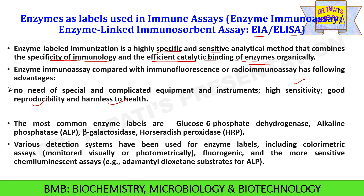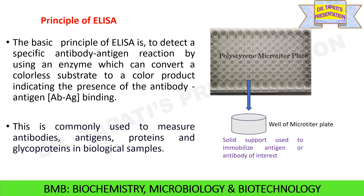The most common enzyme labels are glucose-6-phosphate dehydrogenase, alkaline phosphatase (ALP), beta-galactosidase, and horseradish peroxidase. Various detection techniques have been used for enzyme labels including colorimetric assays, fluorogenic assays and more sensitive chemiluminescence assays. The basic principle of ELISA is to detect a specific antibody-antigen reaction by using an enzyme which can convert a colorless substrate to a colored product, indicating the presence of antibody-antigen binding.